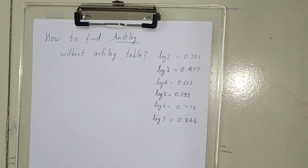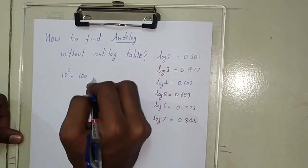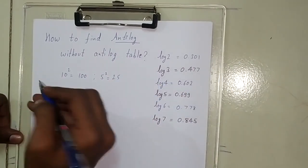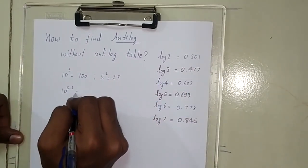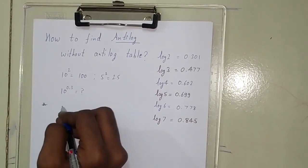Hello everyone, today we'll be finding antilog without using antilog tables. First, what is antilog? For example, 10 squared is 100 and 5 to the power 2 is 25, but what about 10 to the power 0.3? To find this you need antilog. To find antilog without using any antilog table, you need to remember the formula. It's an approximation formula.